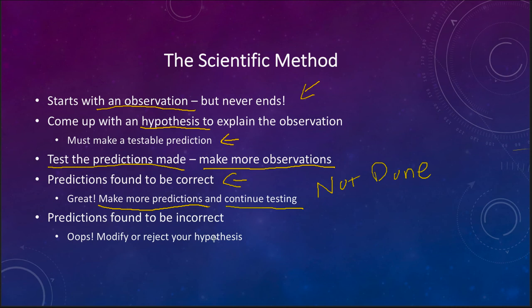Or you may find out that your predictions were incorrect. Oops, I made a prediction that this was going to happen and something completely different happened. That leaves you with a couple of options. You can either modify the hypothesis and make adjustments to it to have it fit your observations. Or you may, if things are bad enough, you might have to reject your hypothesis altogether and go back and start over. Come up with a new hypothesis that then explains not only what our original observation but our new observations as well.